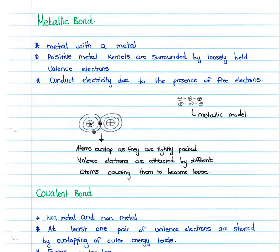Here we have a zoomed in image of our metallic model where we have our positive kernel and our second positive kernel. The atoms overlap as they are tightly packed, and our valence electrons indicated by our small circles over here are attracted by different atoms causing them to become loose.